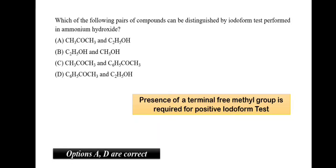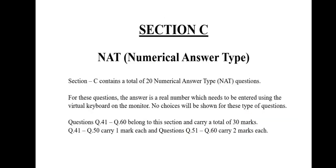Which of the following pairs of compounds can be distinguished by iodoform test performed in ammonium hydroxide? To show positive iodoform test, we require a free methyl group. Here, only the option A and D would have those free methyl group. Thus, A would be the correct answer. Let us see section C. Section C consists of NAT which is numerical answer type. So, you would be given a question and you have to derive answers for it. There will not be any options and there is no negative marking.